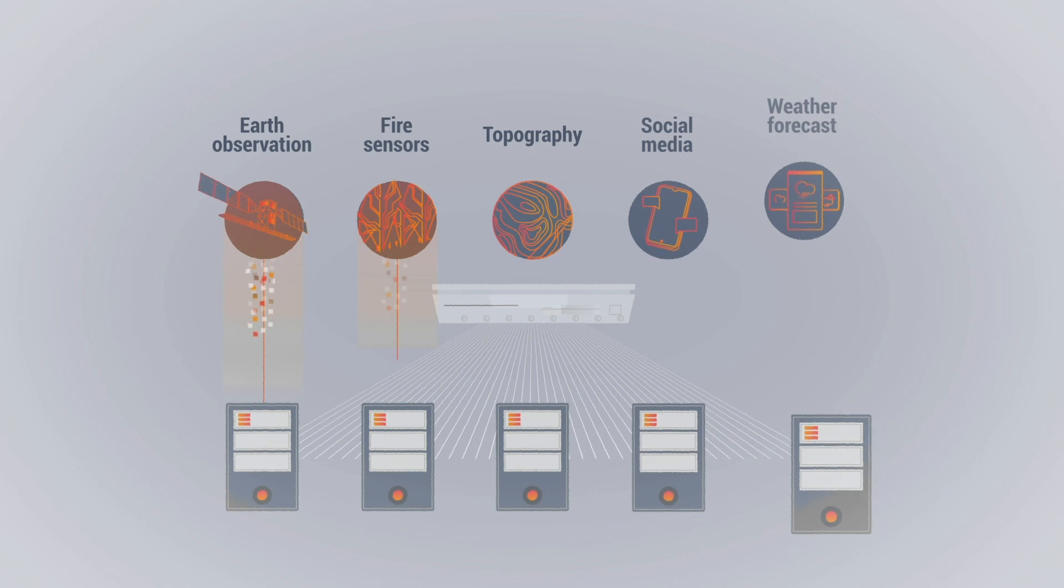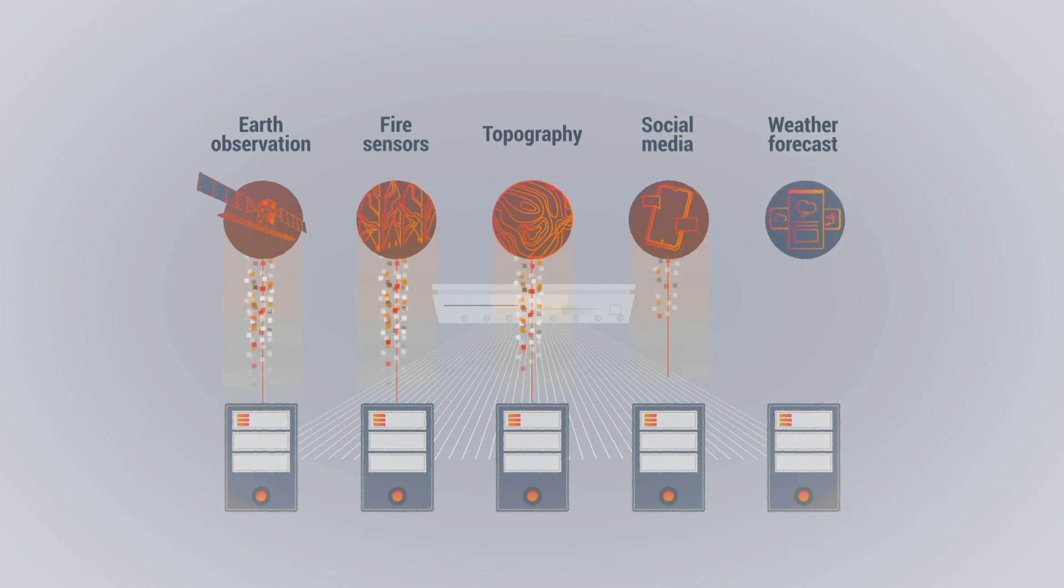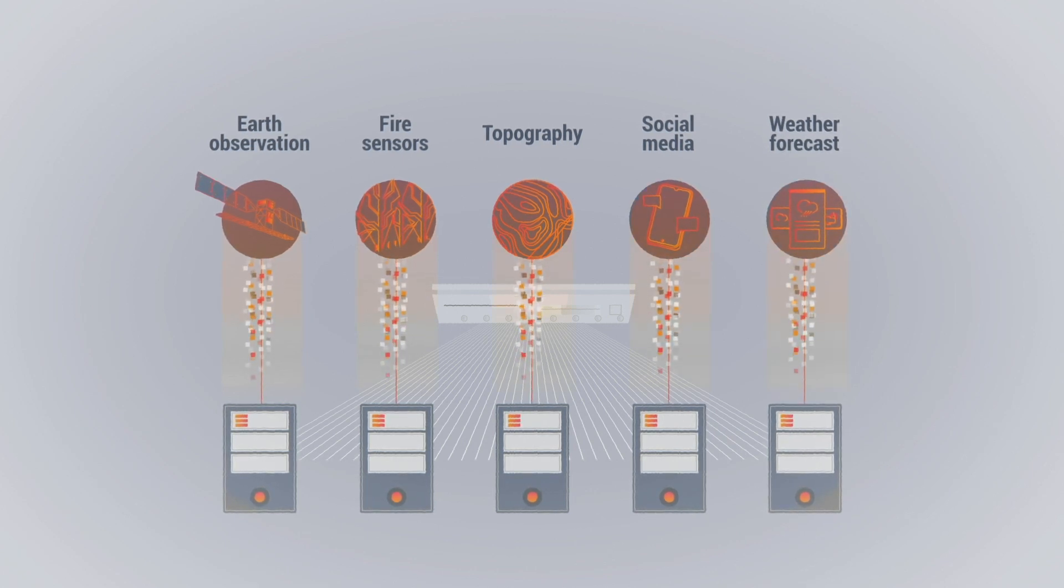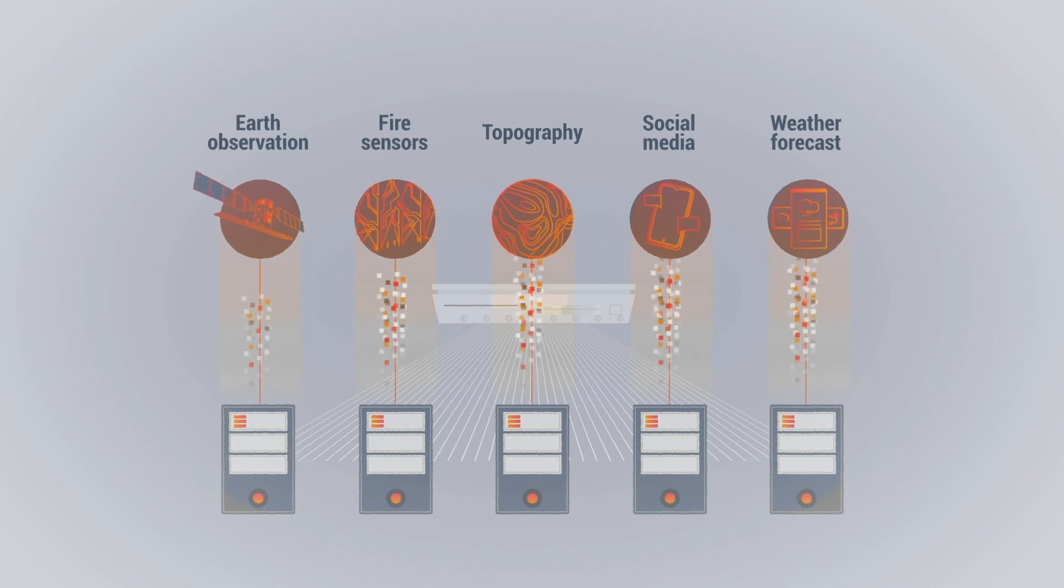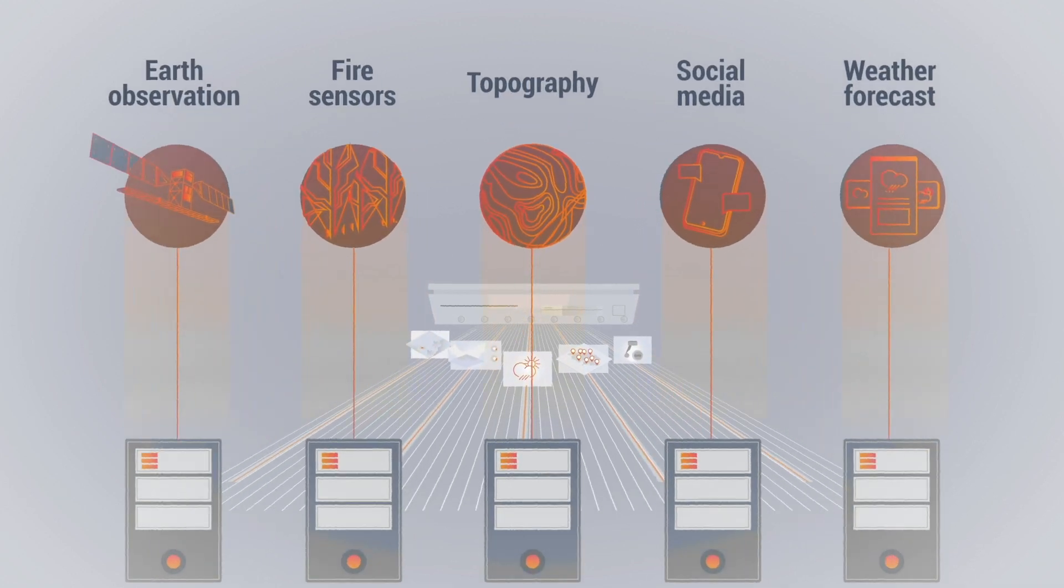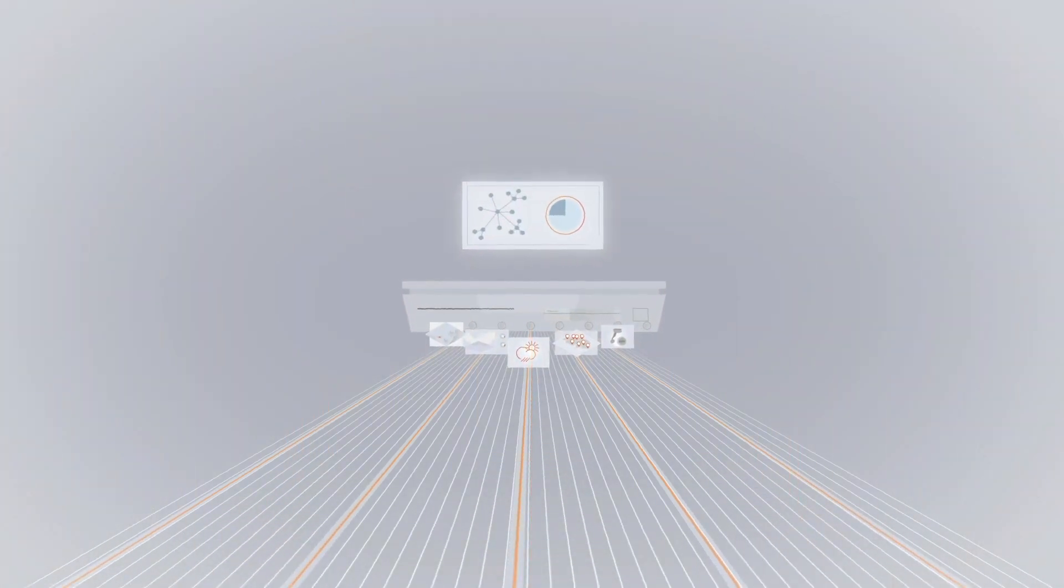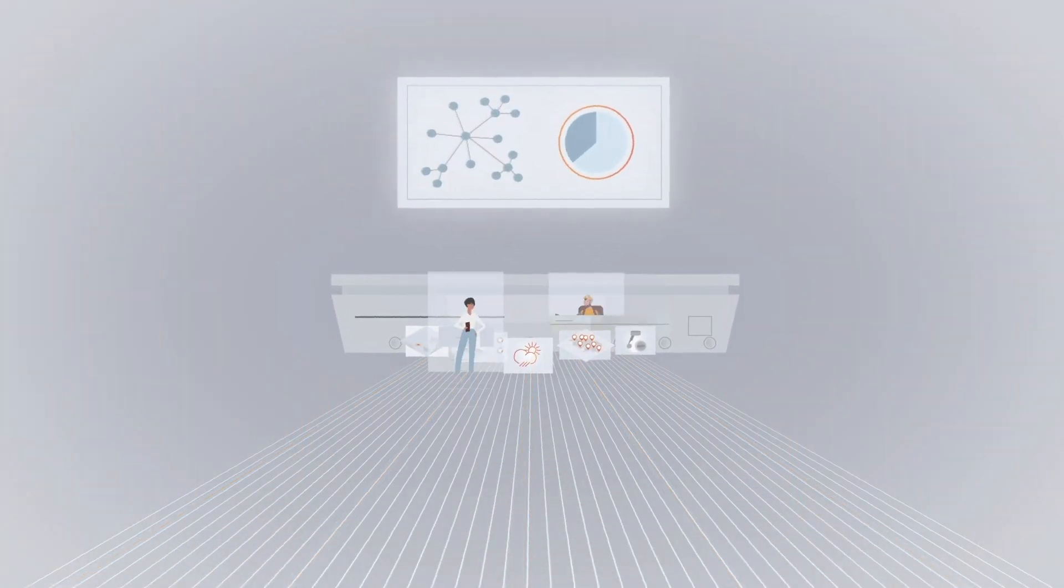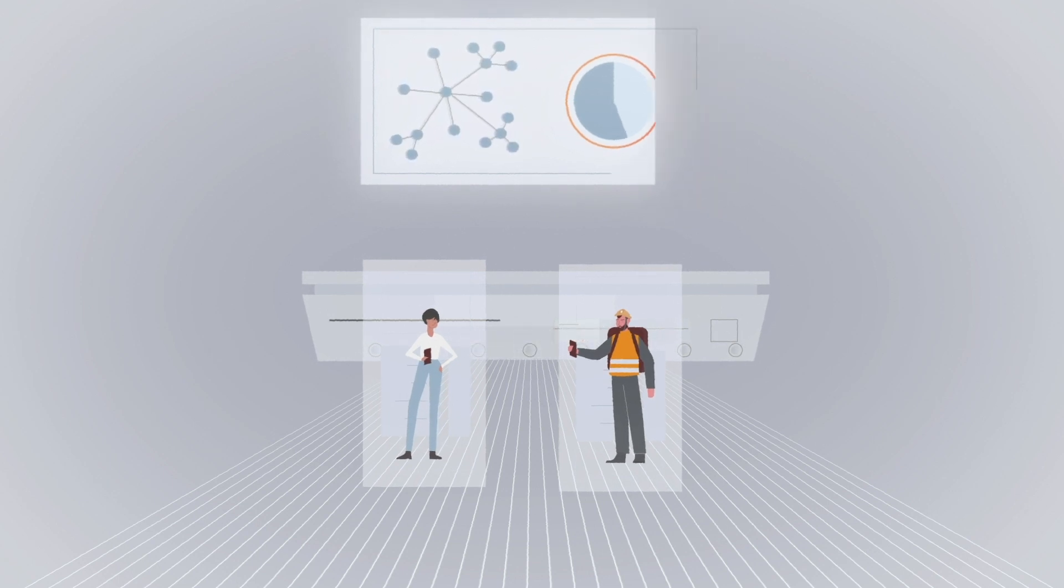The platform will use information from different sources: earth observations from Copernicus and Geos, fire sensors in forests, topographic data, weather forecasts, and even crowdsourced data from social media and other apps that can be used by citizens and first responders to provide situational in-field information.